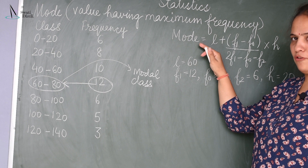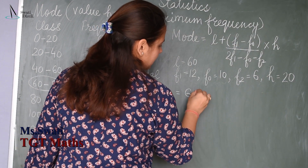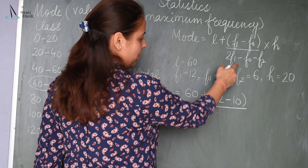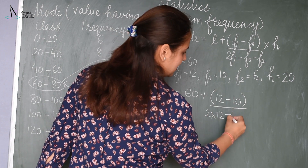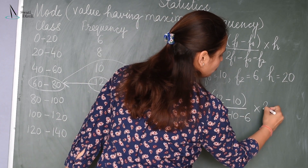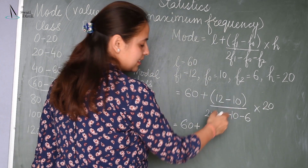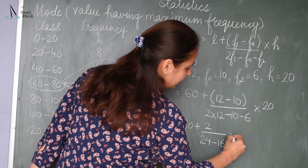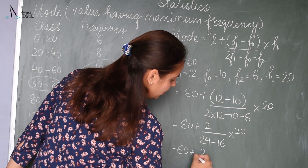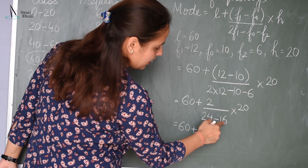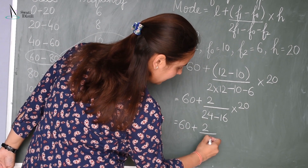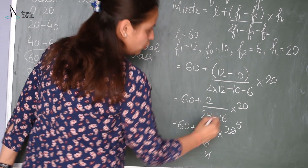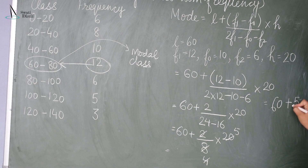Now substituting all values into the formula: Mode = 60 + (12 − 10) divided by (2×12 − 10 − 6) × 20. That gives 60 + 2 divided by (24 − 16) × 20, which is 60 + (2/8) × 20 = 60 + 5 = 65.